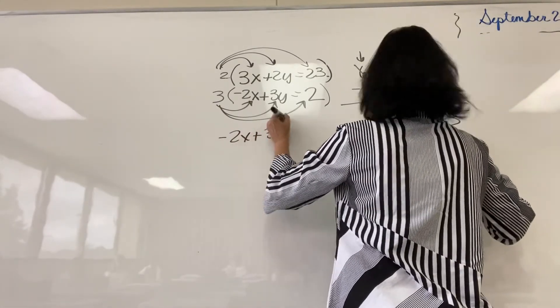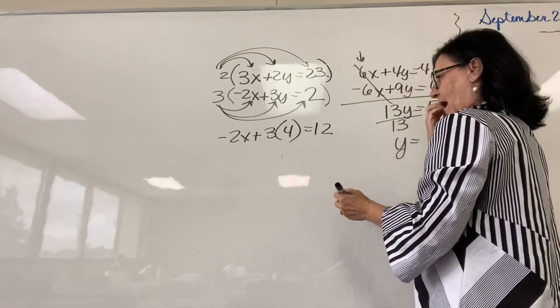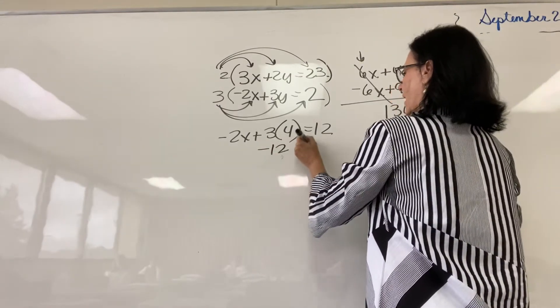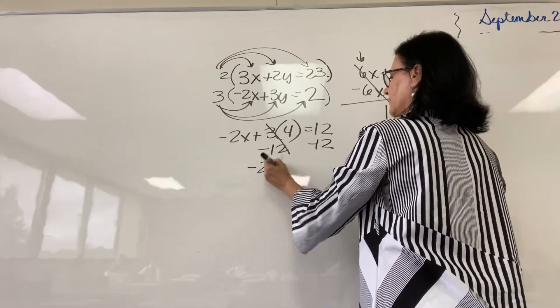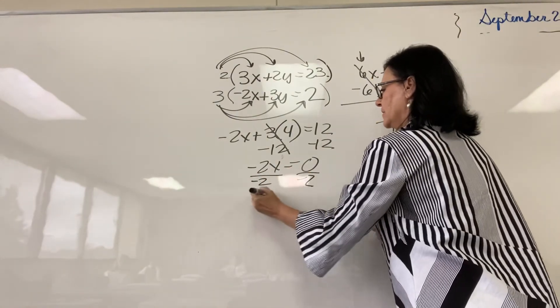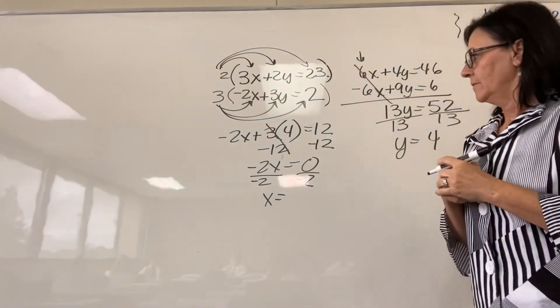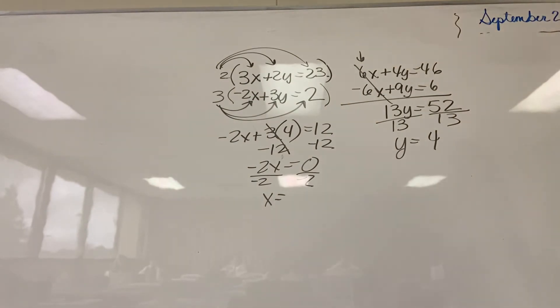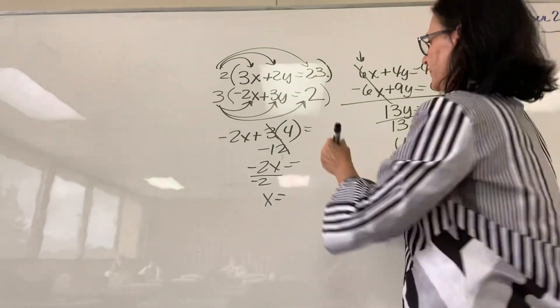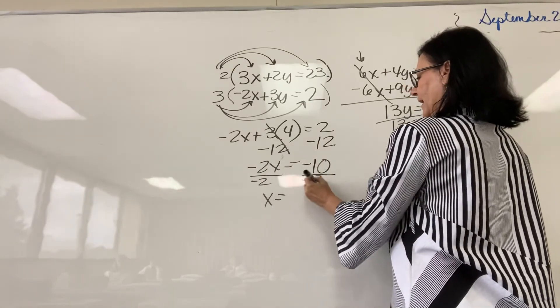So, negative 2x plus 3 times for y, I'm going to substitute in 4, is 12. I already know what x is. Subtract the 12 from both sides. You have negative 2x is 0. Wait, it doesn't equal 2. It equals 2 instead of 12. I then multiply. Oh, my goodness. Subtract 12. Negative 10. Divided by negative 2. x is? 5.